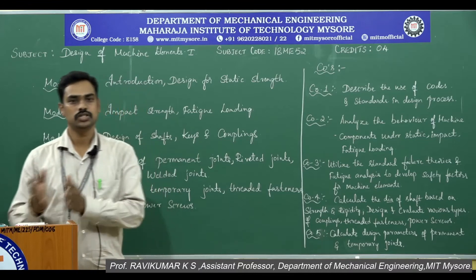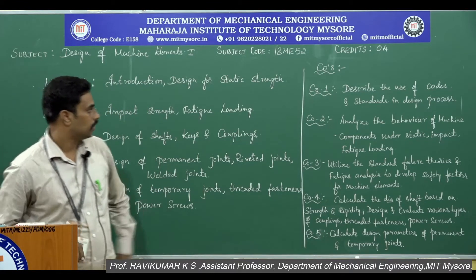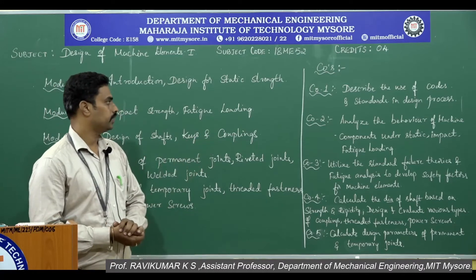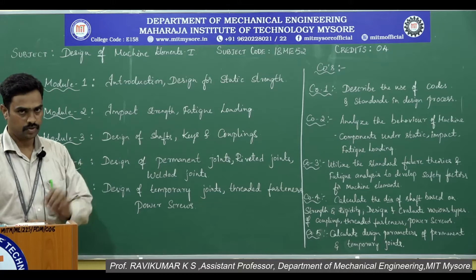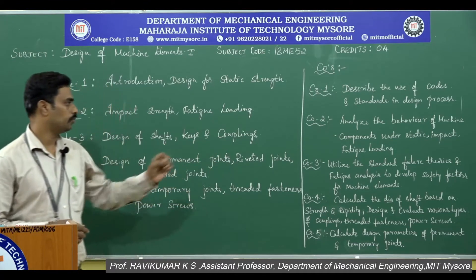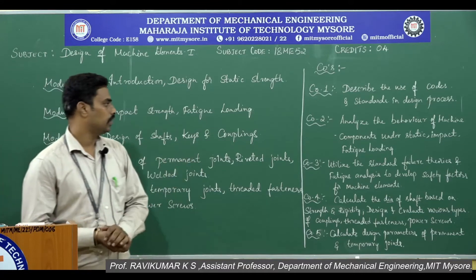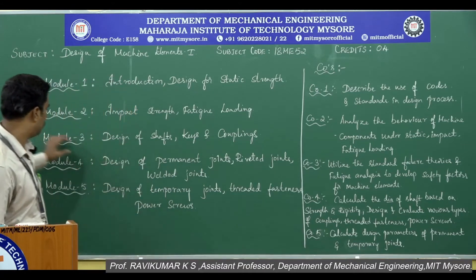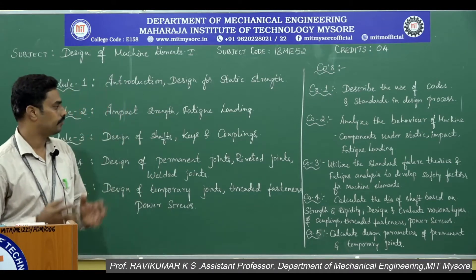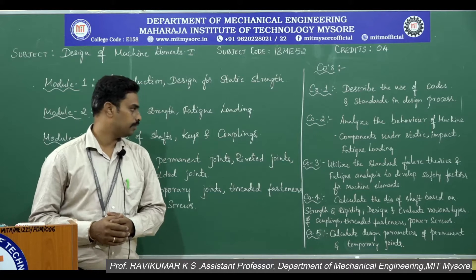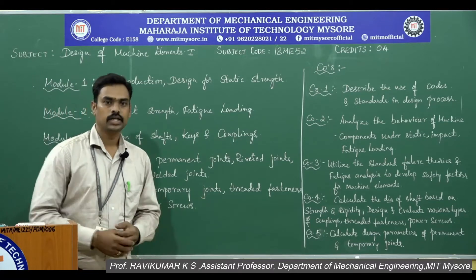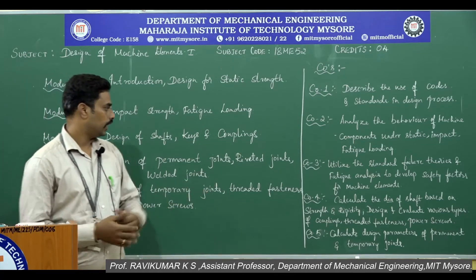The course outcomes (COs): once you complete this subject, CO1 — you will be in a position to describe the use of codes and standards in the design process. CO2 — you will be in a position to analyze the behavior of machine components under static, impact, and fatigue loading, which you will study in the first two modules. CO3 — utilize the standard failure theories and fatigue analysis to develop safety factors for machine elements; there are 5 theories of failure used to calculate the factor of safety.